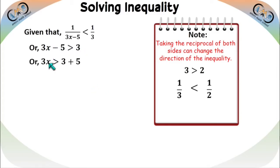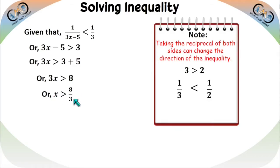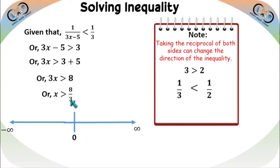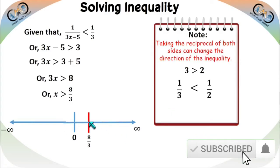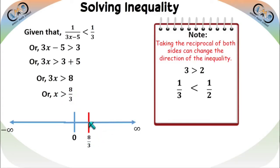Adding 5 to both sides: 3x > 3 + 5, so 3x > 8, giving x > 8/3. On the number line, 8/3 is a positive value. Values less than 8/3 lie to the left and values greater lie to the right. Since x > 8/3, the solution starts from 8/3 (excluded, strict inequality) extending to positive infinity.